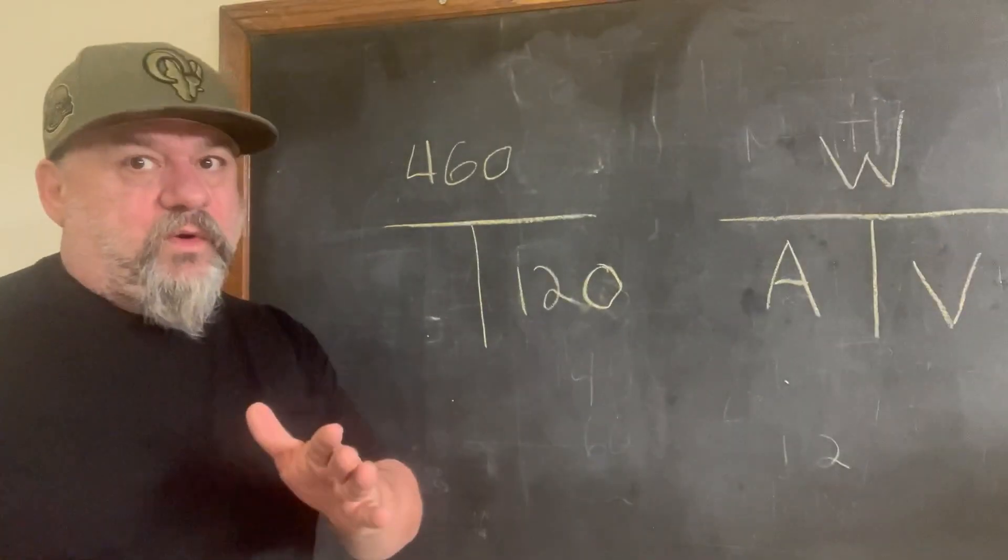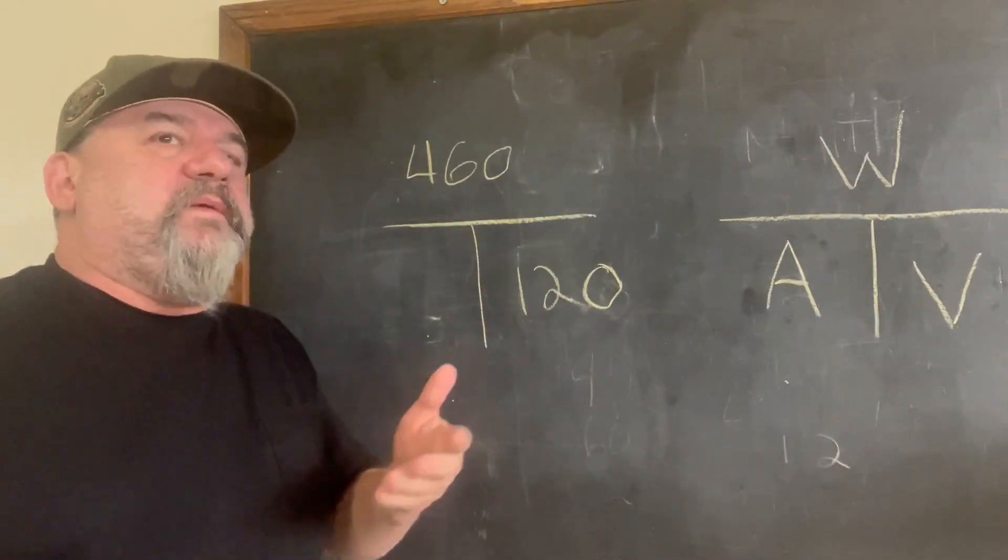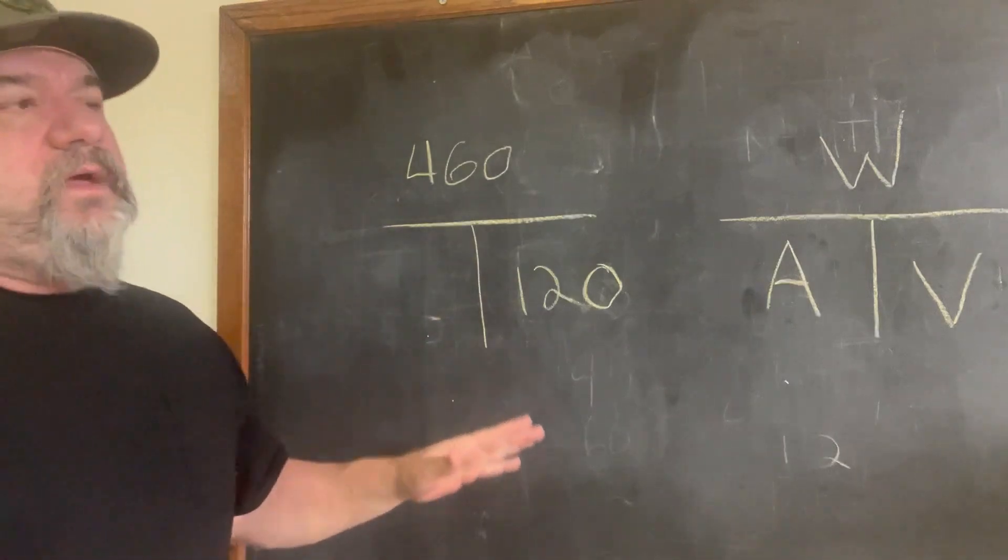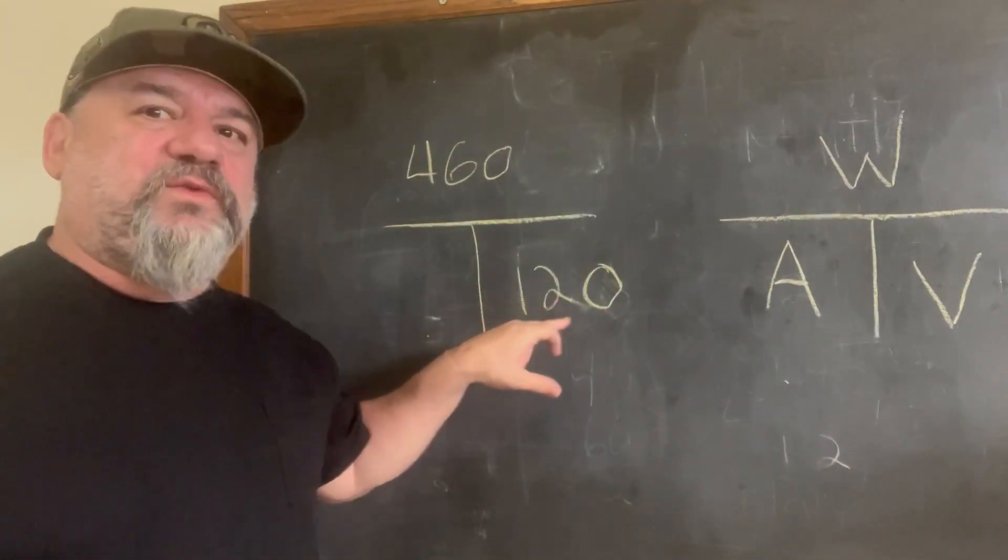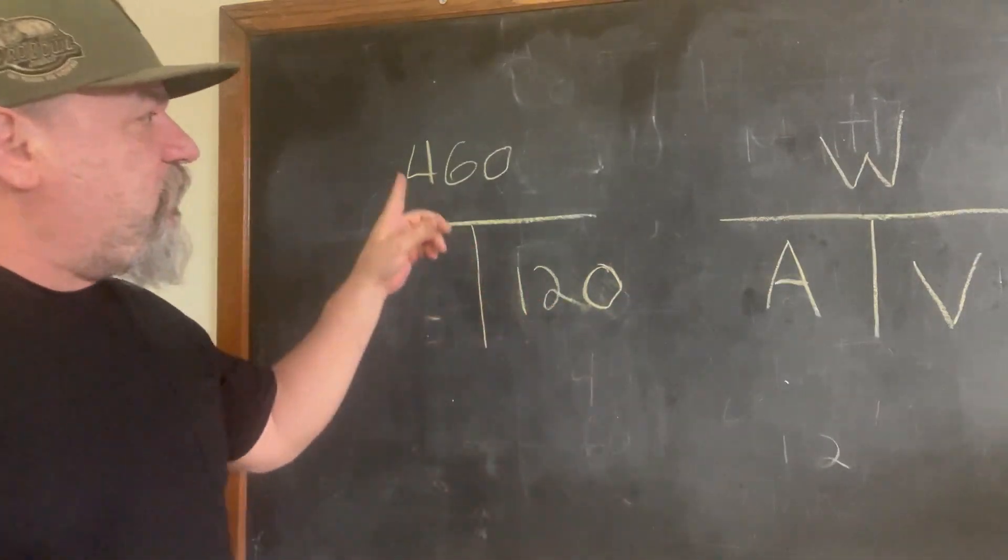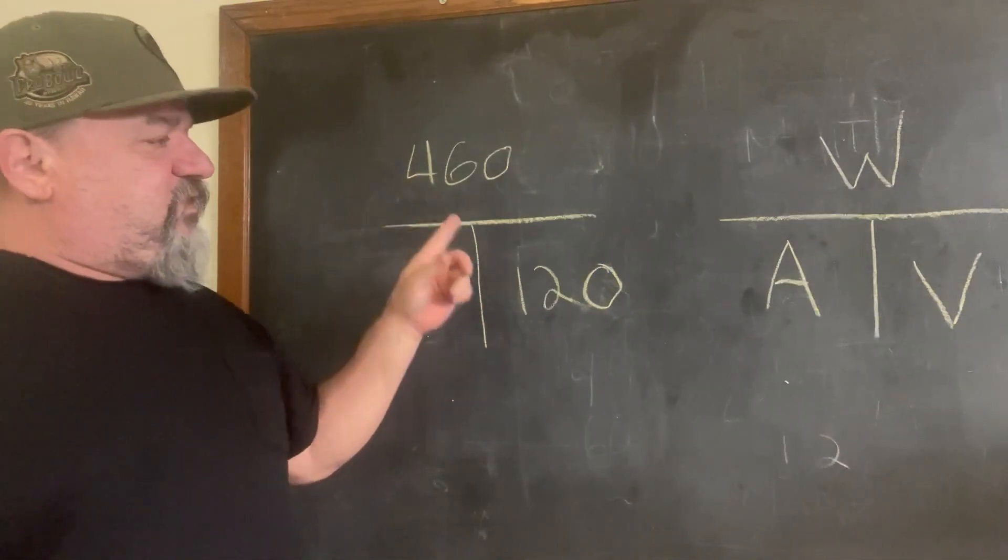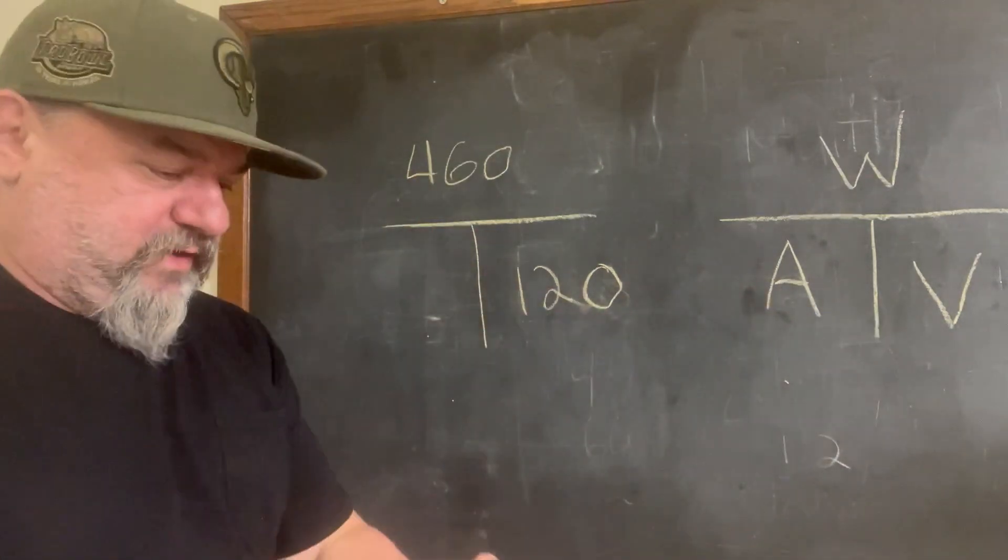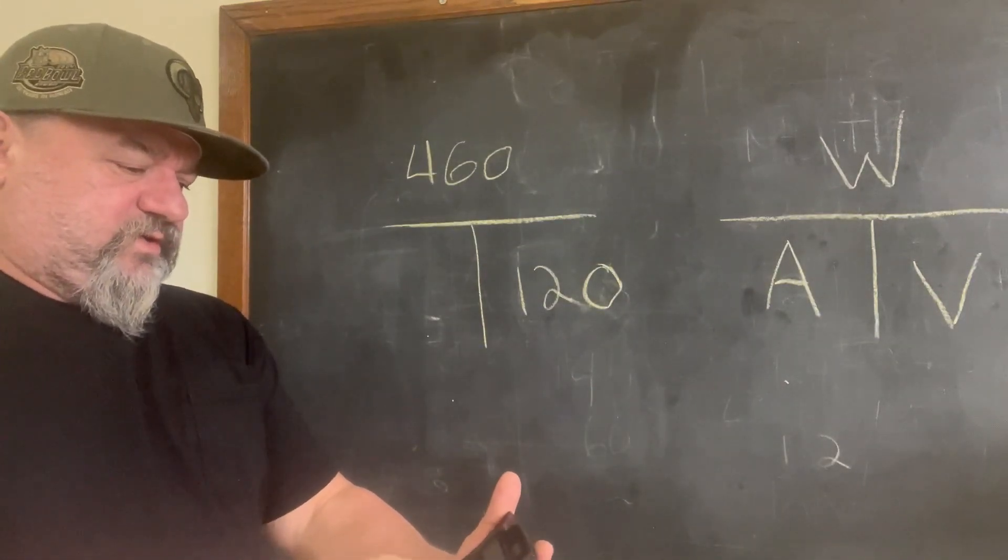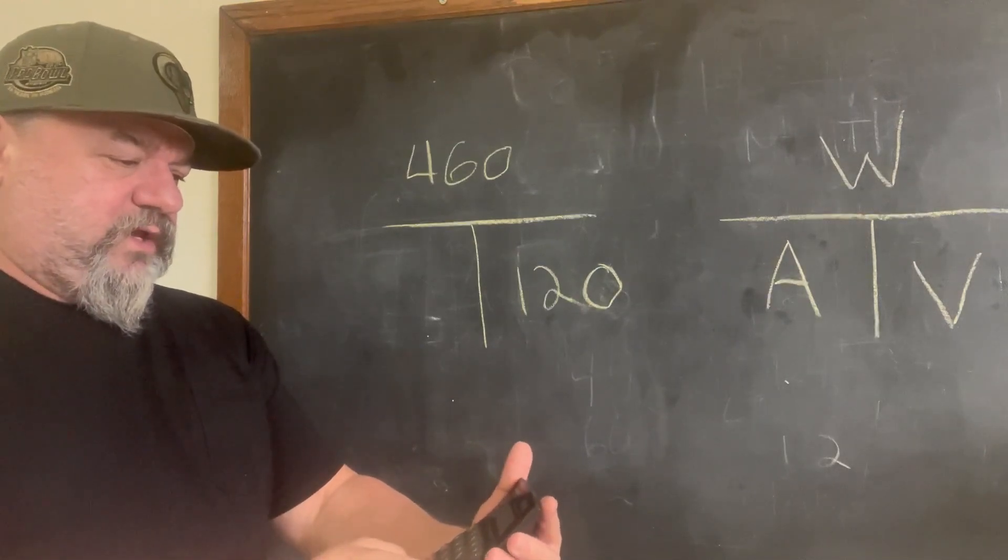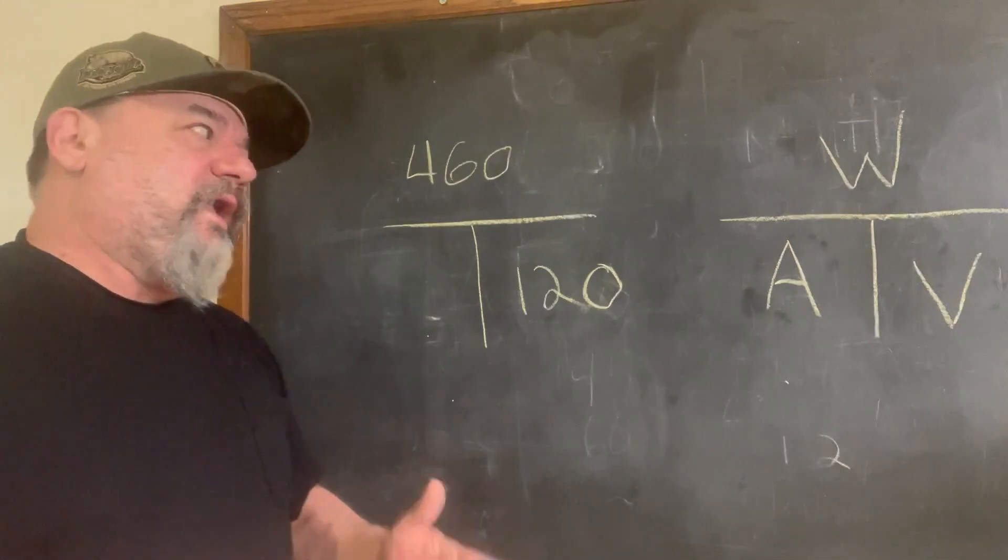So we have our wattage, let's just say 460 watts, maybe a space heater. So that's our wattage. And it's 120 volt. It's not a little 220 outlet. So we're going to divide. So we're going to divide 460 by 120 in order to get our amperage. 460 divided by 120 equals 3.83 amps.